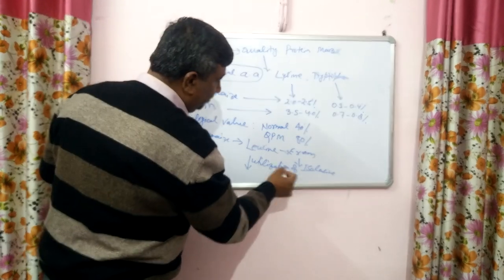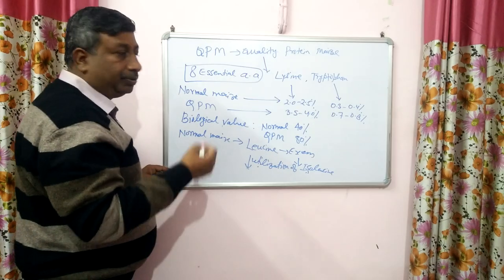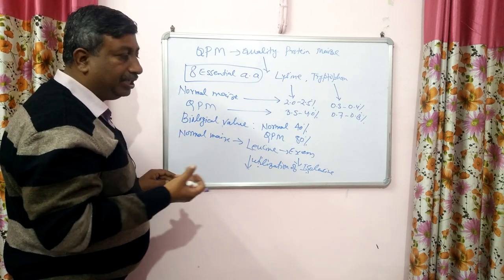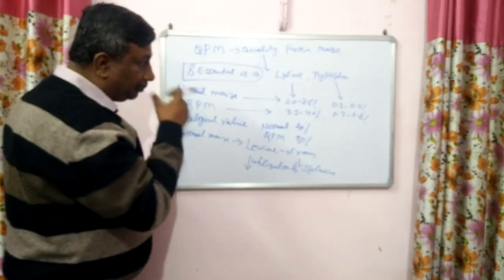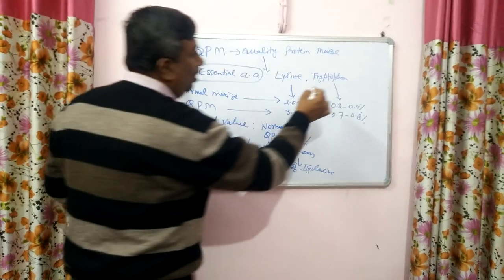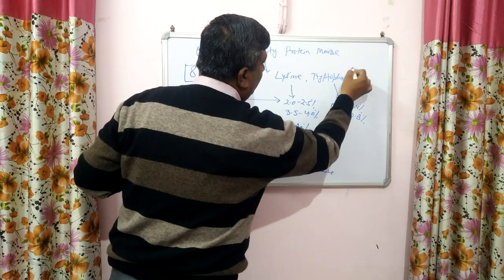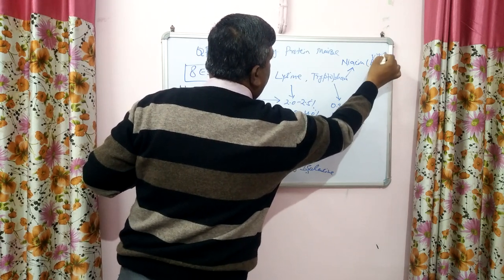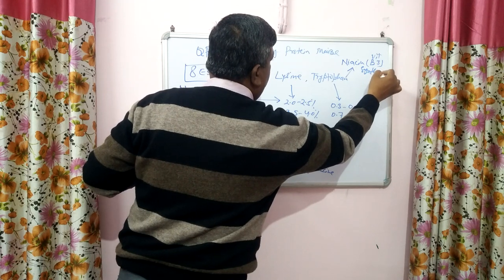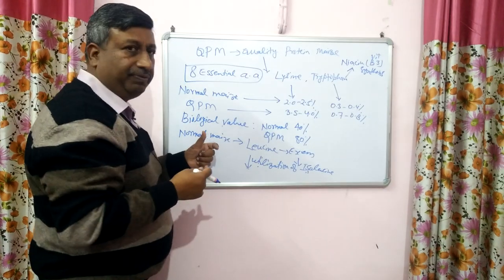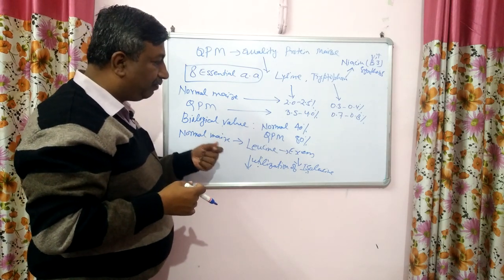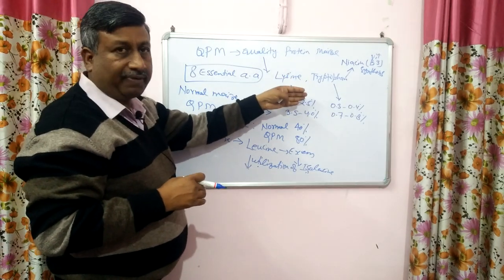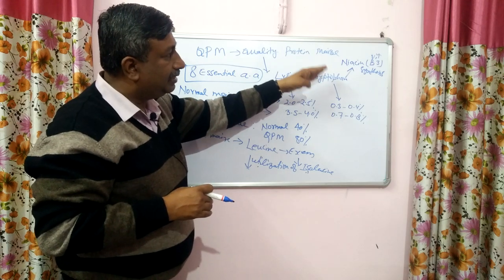Because isoleucine utilization is reduced, niacin formation is also less. Tryptophan is responsible for niacin synthesis, and with less tryptophan and poor utilization of isoleucine, there is poor synthesis of niacin — that is Vitamin B3. So excess leucine reduces isoleucine utilization, which in turn reduces tryptophan availability for niacin biosynthesis.